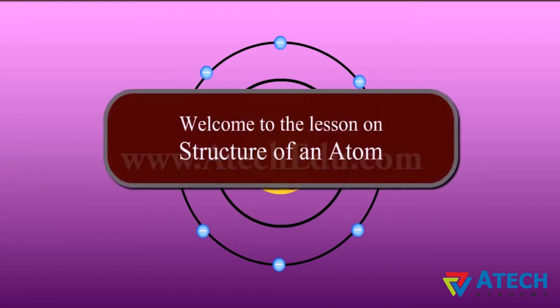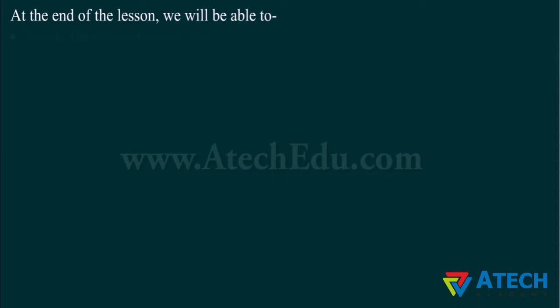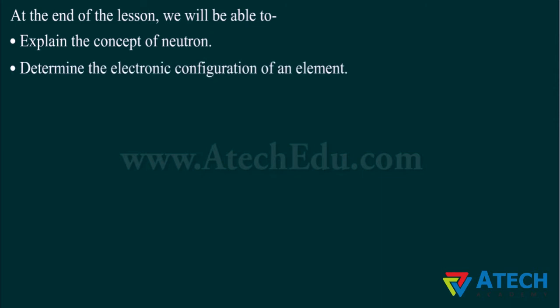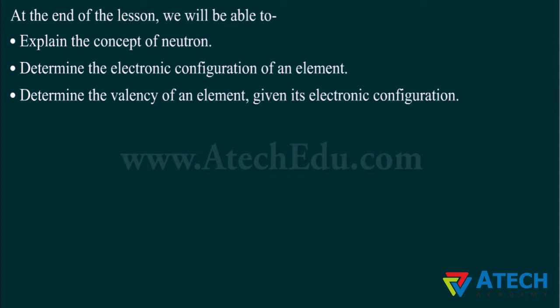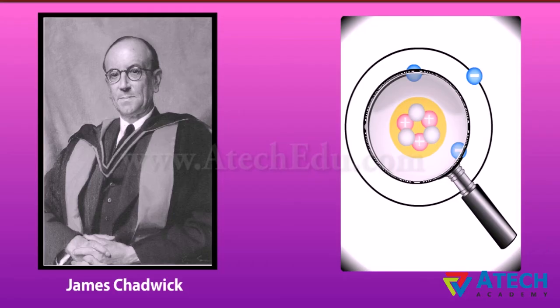Welcome to the lesson on structure of an atom. At the end of the lesson we will be able to explain the concept of neutron, determine the electronic configuration of an element, determine the valency of an element given its electronic configuration, define atomic number and mass number, define isotopes and isobars, and list the applications of isotopes.